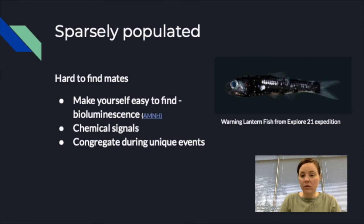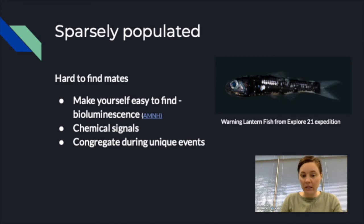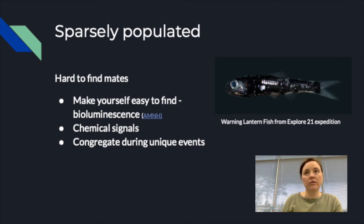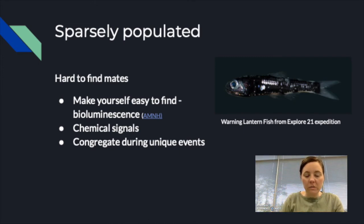Another challenge is that the pelagic zone is very sparsely populated, making it hard to find mates. Some organisms use bioluminescence or chemical signals to advertise their location to potential mates. Organisms also tend to congregate during unique events — such as a full moon, when they can sense changes in gravity — gathering in a specific area they've always used for mating.